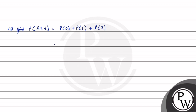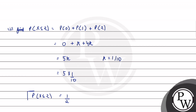So, this will be 0 + k + 4k, which gives 5k. We have k = 1/10, so this will be 5 × (1/10). Therefore, the probability when x is greater than or equal to 2 is 1/2. This is our final answer to part 2. Hope you understood the solution — all the best.